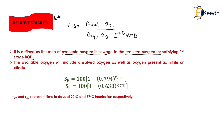From previous data, we had computed two types of empirical formulas. The first is: Relative Stability = 100 × (1 − 0.794^T) at 20 degrees Celsius, where T is time in days at 20 degrees Celsius incubation.